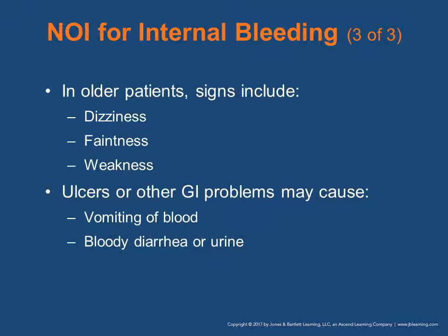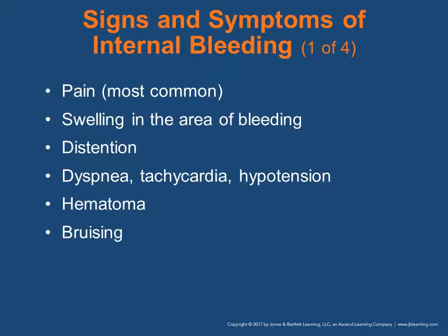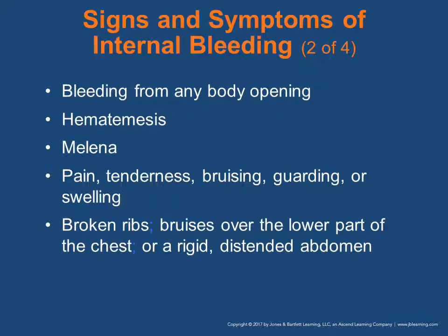Signs and symptoms of internal bleeding may be pain — the most common — swelling in the area of bleeding, distension of the abdomen, dyspnea, tachycardia, hypotension, a hematoma, and bruising. Bleeding from any body opening, hematemesis — bloody vomitus — melena, which is black tarry bloody stool, pain, tenderness, bruising, guarding or swelling, broken ribs, bruises over the lower part of the chest, or rigid distension.